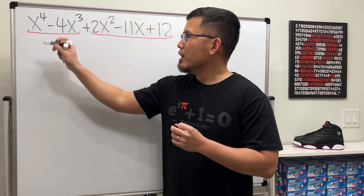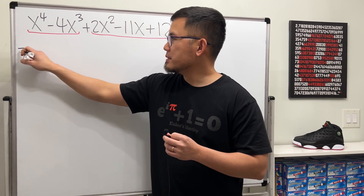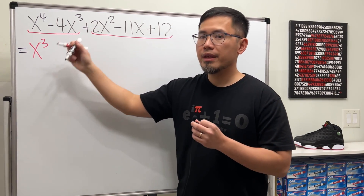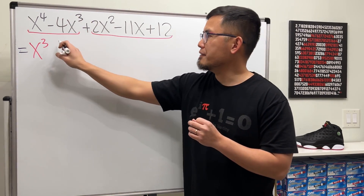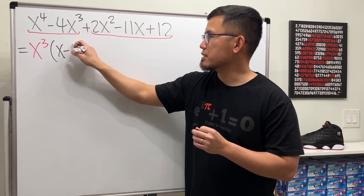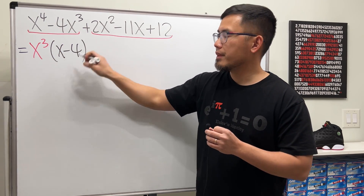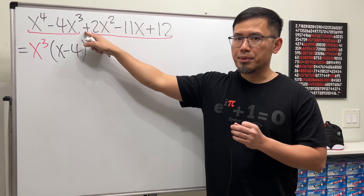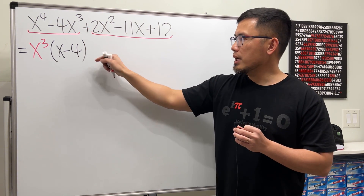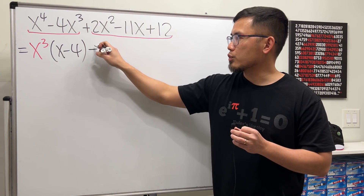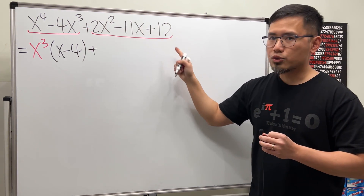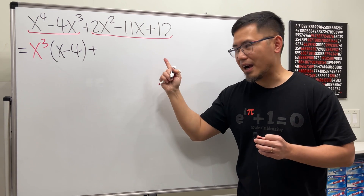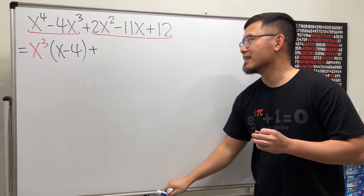Here we go. For the first two terms now, we can factor out x to the third power, and then we will have just x minus 4. And then for the last three terms, we have a plus — go ahead and write that down right away. And this is a quadratic trinomial, and it's actually factorable.